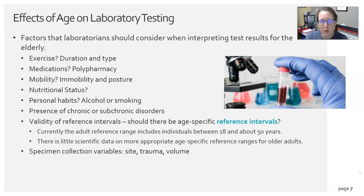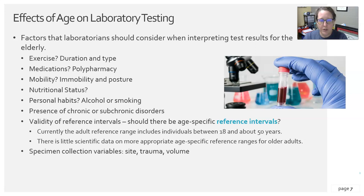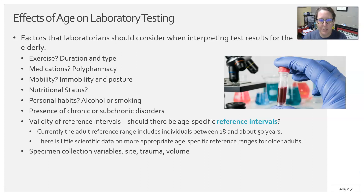Also consider nutritional status — are they eating adequately? Elderly people often don't eat as much, don't feel like cooking, or may forget to eat. Consider personal habits such as alcohol consumption and smoking, and whether they have any chronic or subchronic disorders. A chronic disorder could be COPD or congestive heart failure. A subchronic disorder may go undetected, lingering in the background and potentially being missed.